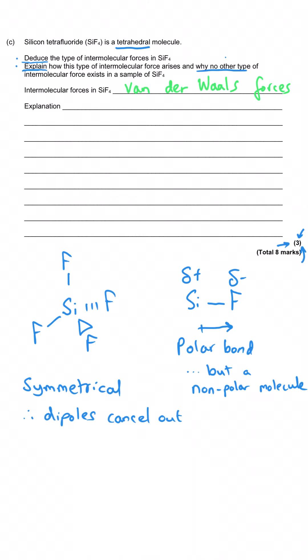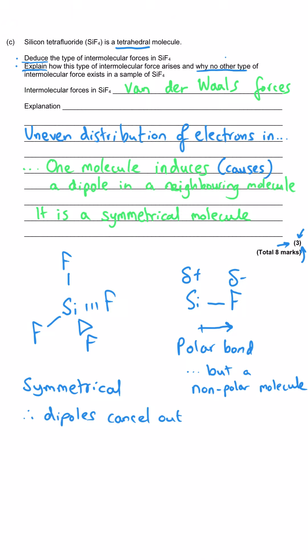And then for our explanation marks, we just need to give one mark as to why these van der Waals forces arise. And so what you get is you get uneven distribution of electrons in one molecule inducing or causing a dipole to arise in a neighbouring molecule. And now on to the final mark. I've already explained why no other type of intermolecular force exists. So what do you need to write down to get the mark? Well, you just need to write down that it is a symmetrical molecule. And that's all you need to say to get yourself the mark. Or you could say that these dipoles cancel each other out. Either of those is absolutely fine for that final mark.